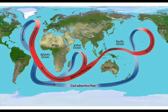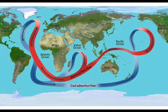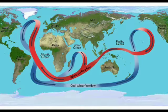There are two kinds of currents: warm currents and cold currents. Warm currents originate near the equator and flow towards the poles. Cold currents originate in the high latitudes and flow towards the equator.